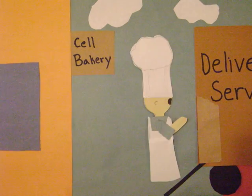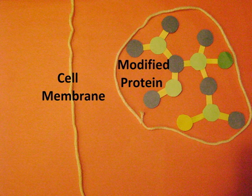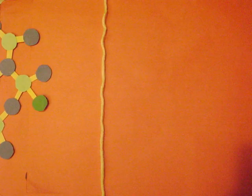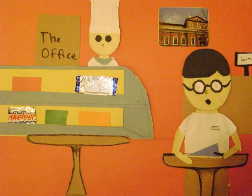The cake is then shipped to the consumer or enjoyed by the customer. When a protein is complete and packaged, it is then sent out for the body's use or used by the cell for its own processes. That is how your cells make proteins.